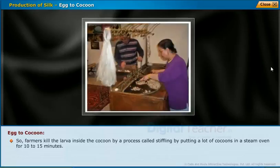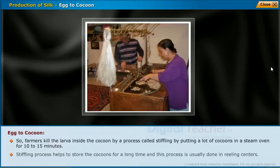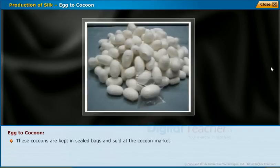If the cocoons are left to themselves, the cocoons develop into moths and fly away, and when the moths come out the thread gets damaged. So farmers kill the larva inside the cocoon by a process called stifling — putting the cocoons in a steam oven for 10 to 15 minutes. Stifling helps store cocoons for a long time and is done at reeling centers. These cocoons are then kept in sealed bags and sold at the cocoon market.